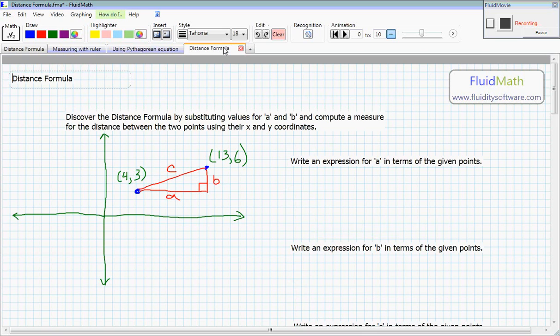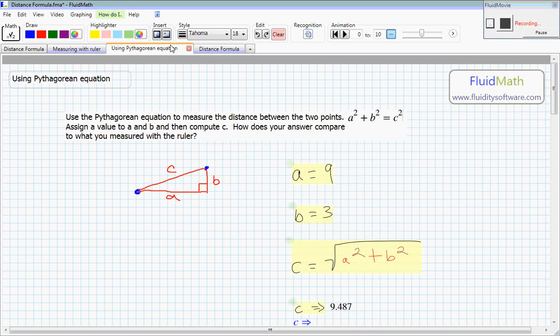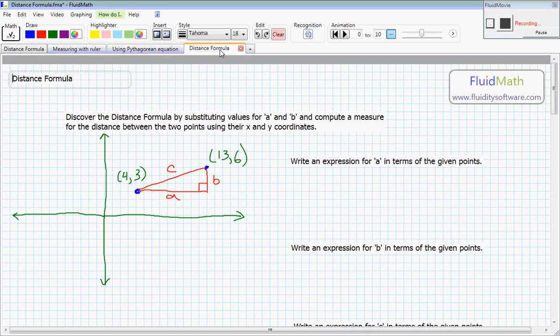So we're going to derive the distance formula. We want a formula where given two points and their coordinate pairs, such as four comma three and thirteen comma six, given two points and their x, y coordinates, we want to compute a distance. So what we've done here, we've taken the same two points in blue. I'm going back a tab to the work we just did. If I click on the next one, you can see we have the same triangle. But I've added a coordinate axis, axes here for x and y and the origin, which is here.